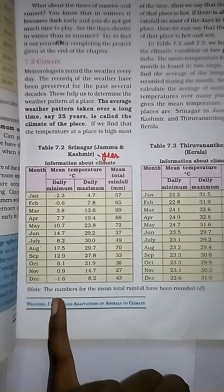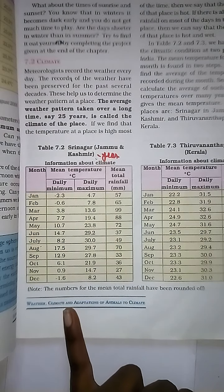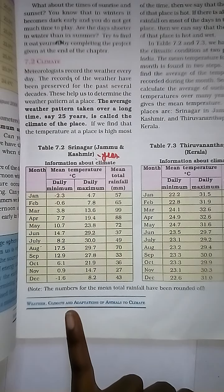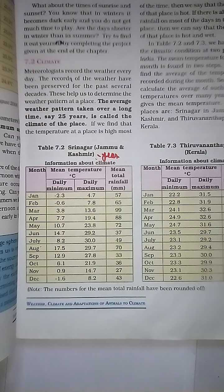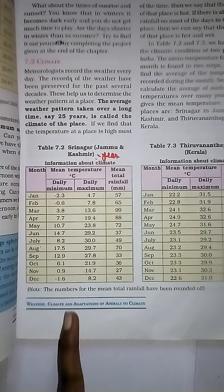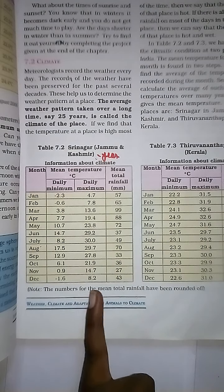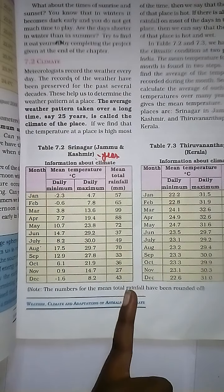The table continues with February, March, April, May, June, July, August, September, October, November, and December. In the table you can see the maximum and minimum temperature and rainfall figures for Jammu and Kashmir.